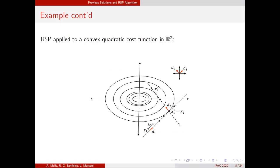To better understand this, let's continue the previous example on the two-dimensional convex quadratic cost function. The RSP algorithm continues by exploring the set of directions, starting again with direction d1 to find the minimum of f along this line. As you can see, along d1 starting from x1 and d1 starting from x2 star, these are two parallel minimizations. The RSP updates the set of directions as the direction defined by the vector connecting the minima along these two parallel line minimizations. By the property of conjugate directions, this new conjugate direction passes through the minimum, so a line minimization along this direction reaches exactly the minimum of this convex quadratic cost function.